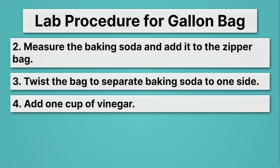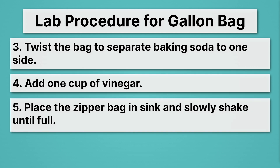Then we'll add one cup of vinegar — that's for the gallon bag; for the quart bag we'll add less. Then we'll place the zipper bag in a sink and slowly shake it until full. It's getting full because of the chemical reaction. You want to do it in the sink because it can make a mess if you got your math wrong. All right, let's practice that math.